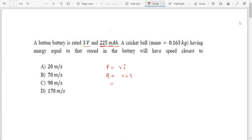225 milli ampere current for an hour. So we can say that voltage is 3 volts and current is 225 milli ampere, that means 10 to the power minus 3, for how much time? 1 hour, that means 3600 seconds.